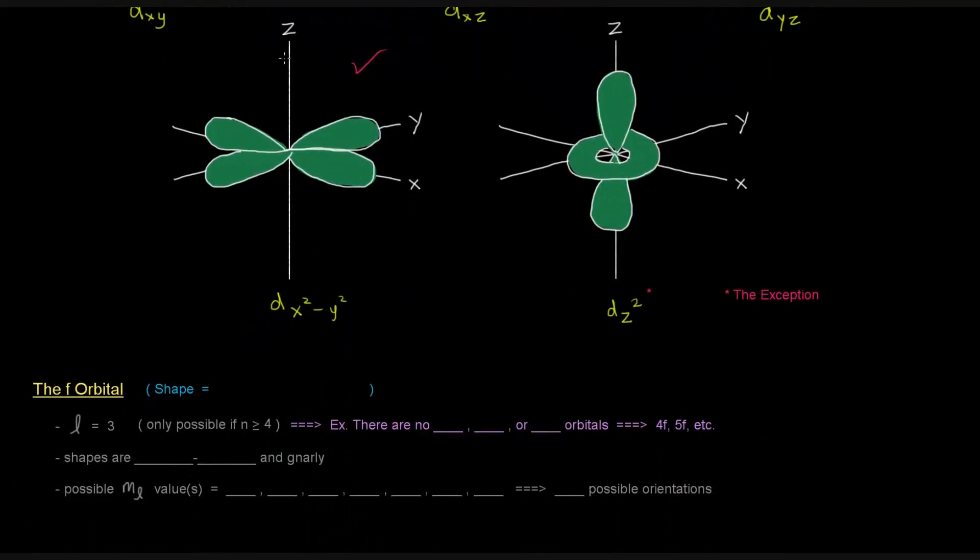The f orbital, up next, its L value is 3, and its shape is all kinds of complicated. The different f orbitals are crazy. I don't even really know what they look like. I've seen one, but the point is that it's crazy.